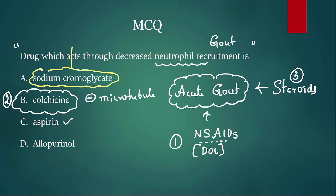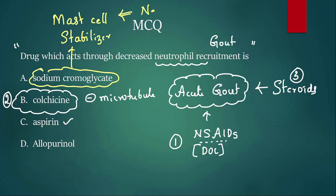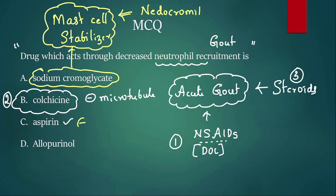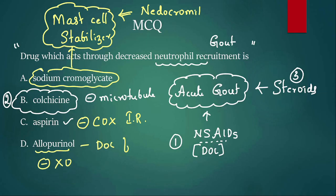Sodium cromoglycate is a mast cell stabilizer used for prophylaxis of bronchial asthma. Another drug is nedocromil — both are used for asthma prophylaxis as mast cell stabilizers. Aspirin's mechanism of action is irreversible inhibition of COX. Allopurinol inhibits the enzyme xanthine oxidase and is the drug of choice for chronic gout.